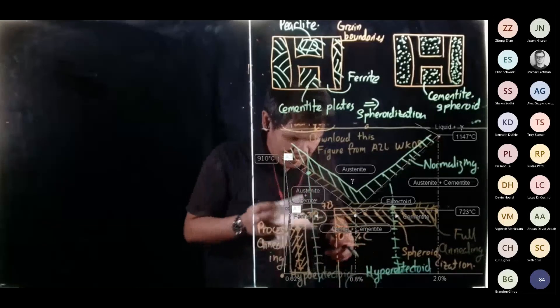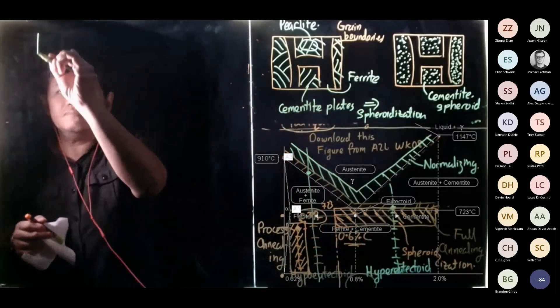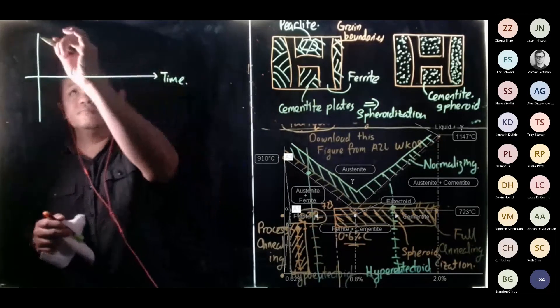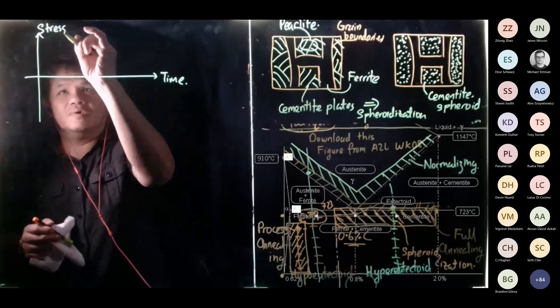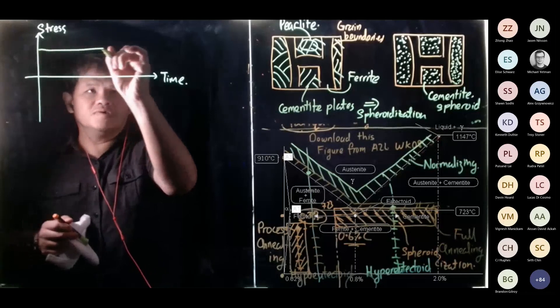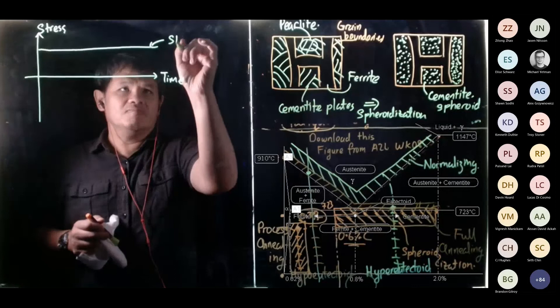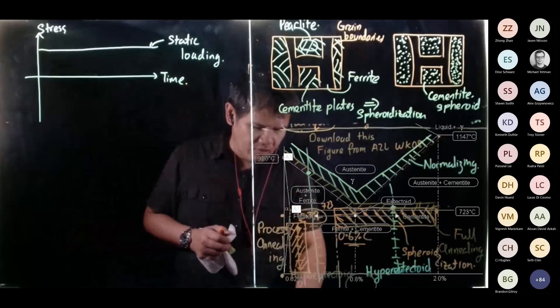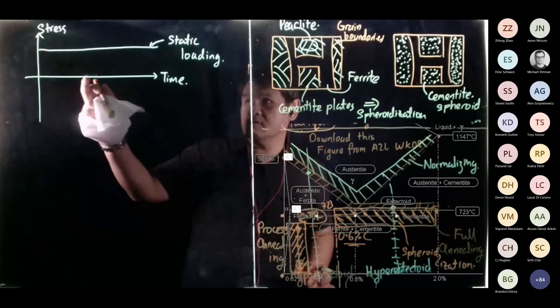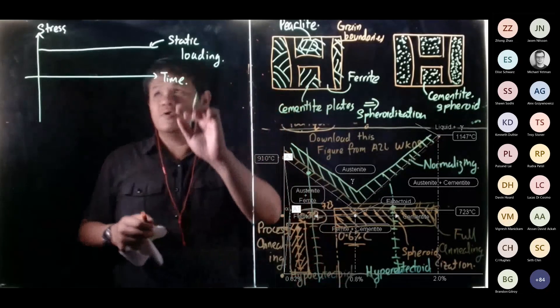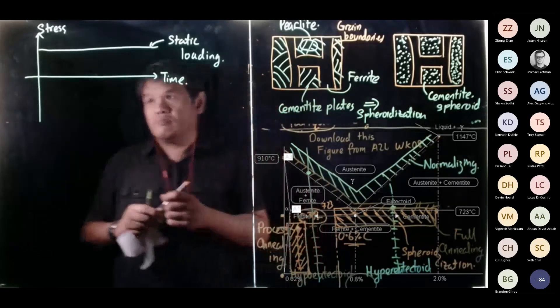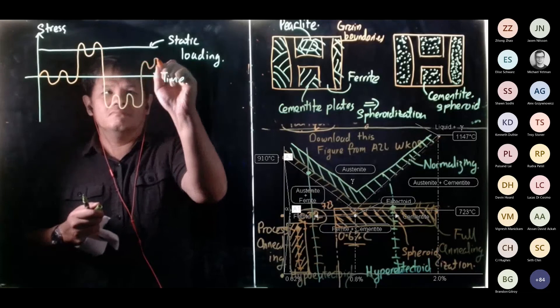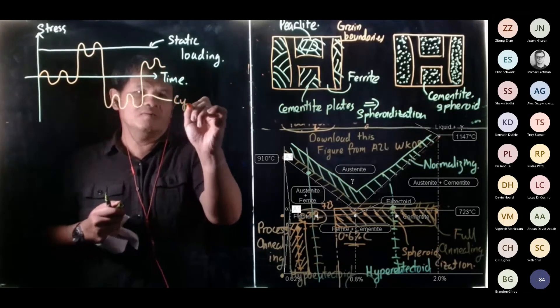So what do we mean by cyclic loading? So if this is time and this is stress, if it goes straight line just like this, we call it static loading. So those of you in mechanical engineering, what you're learning in 2P04 is known as static loading. The load, the stress did not change. And cyclic loading is where this occurs. So this is what we call cyclic loading.